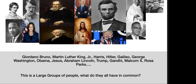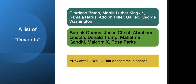You've got this really big list. Look at all these people: Giordano Bruno, Martin Luther King Jr., Kamala Harris, Adolf Hitler, Galileo, George Washington, Barack Obama, Jesus Christ, Abraham Lincoln, Donald Trump, Mahatma Gandhi, Malcolm X, Rosa Parks. I ask you — pause this if you'd like — what do these people have in common? What does Abraham Lincoln and Adolf Hitler have in common? Simply put, I just showed you a list of deviants. Let that sink in.